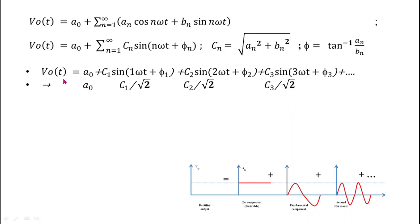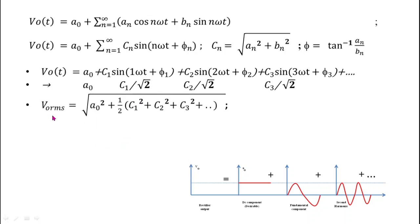To find the RMS value of the output voltage, we square and add all the individual RMS values and take the square root. This gives: V₀rms = √(a₀² + ½(c₁² + c₂² + c₃² + ···)), which can also be written as √(a₀² + (c₁/√2)² + (c₂/√2)² + (c₃/√2)² + ···).